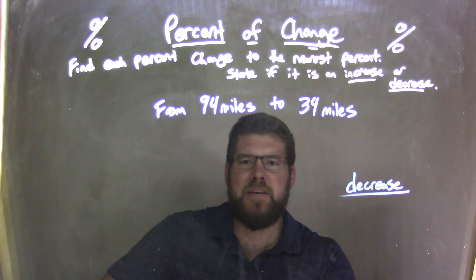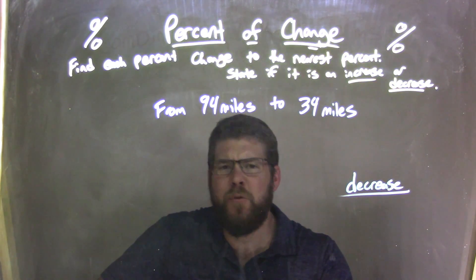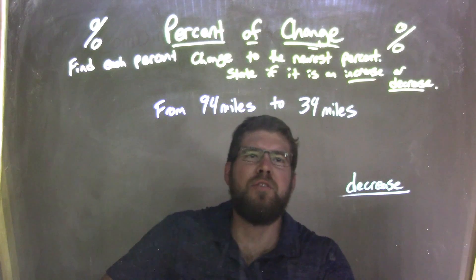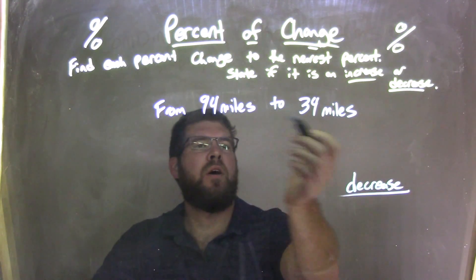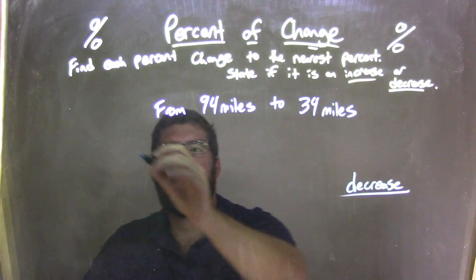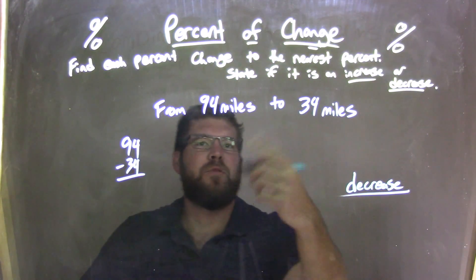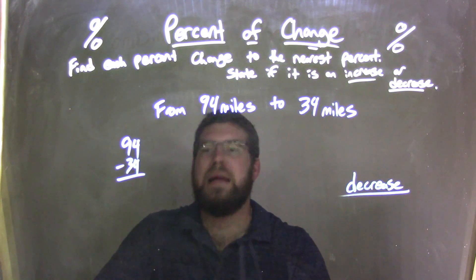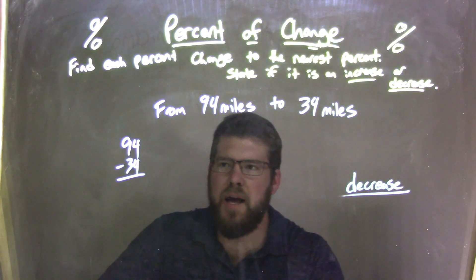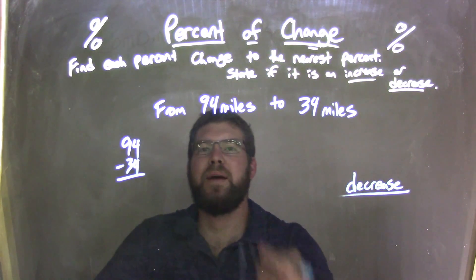Now we need to find the difference between these two. To find the difference, I need to deal with positive numbers here. I'm just going to take whatever number is larger, which is 94, and subtract 34 from it. I take 94 minus 34, and that will give me the difference between these two, how many units are between them. I want it to be positive, so I'm picking the larger one first.